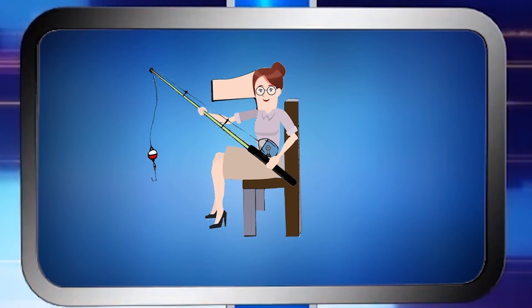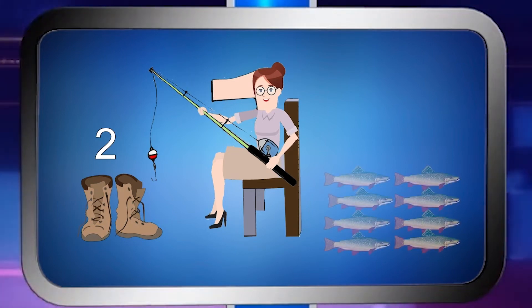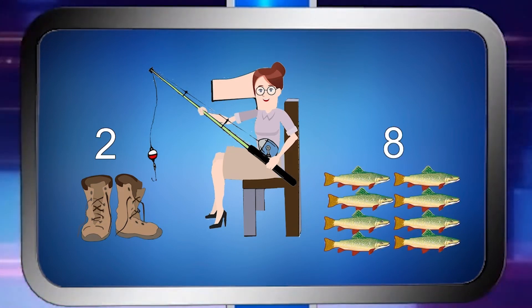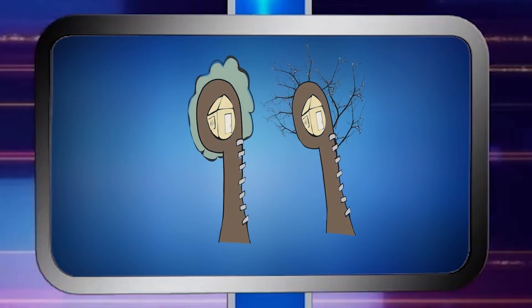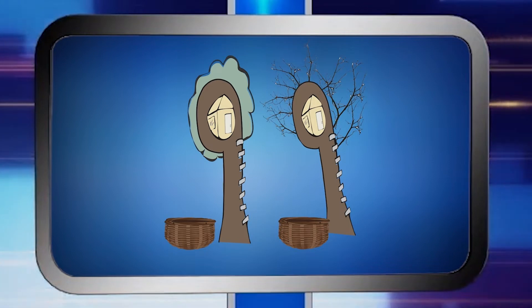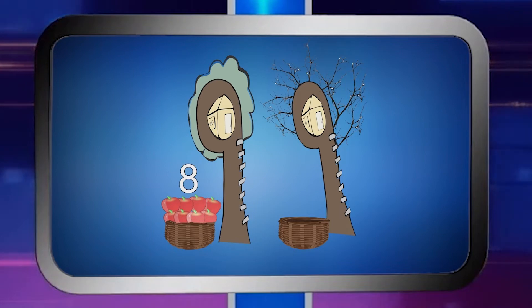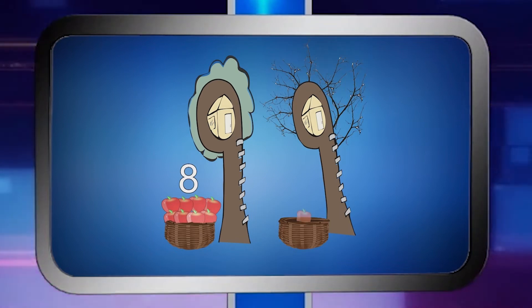What did Mrs. Week sit on when she fished? A chair. How many boots did Mrs. Week catch? She got two boots. How many fish did she catch? She caught eight fish. There were two treehouses — what did they grow? They grew apples. How many apples did the first treehouse grow? Eight apples. How many apples did the second treehouse grow? It grew only one apple.